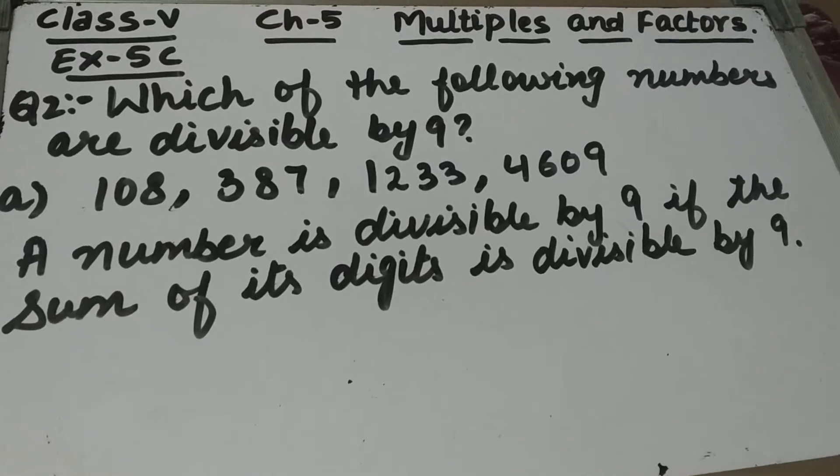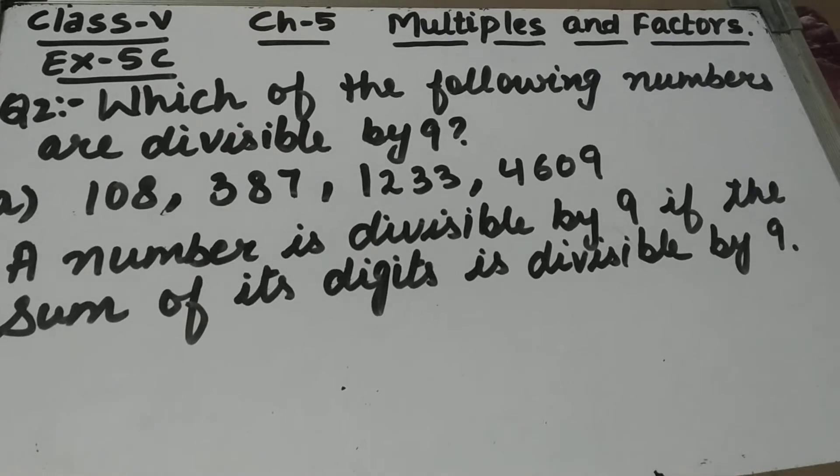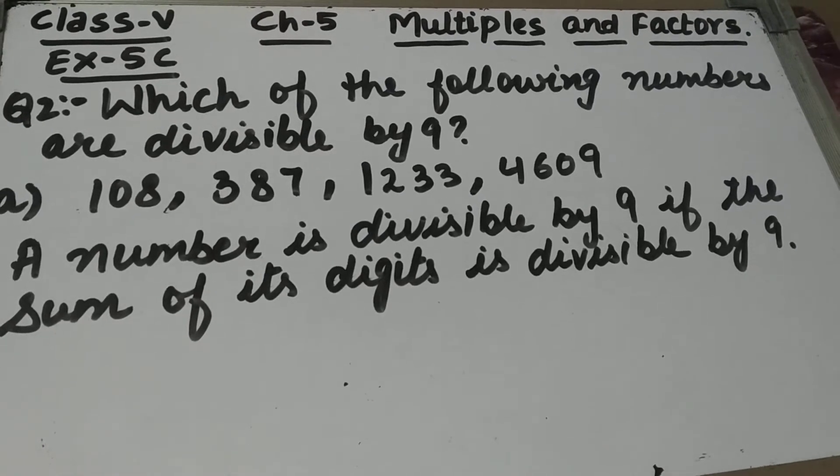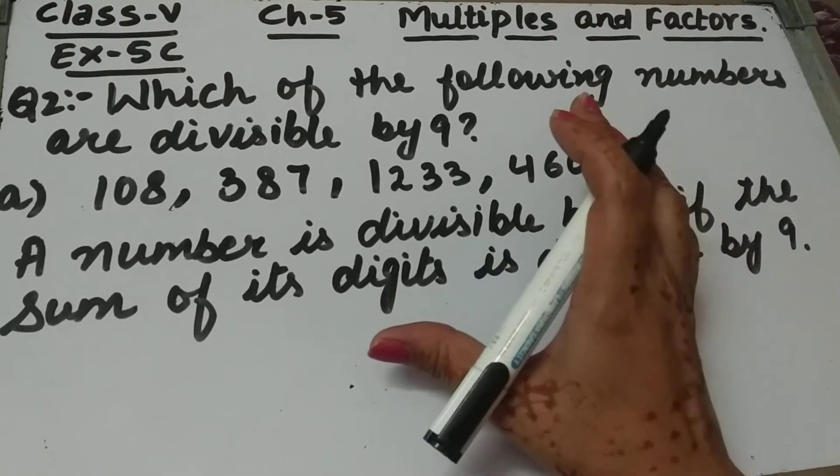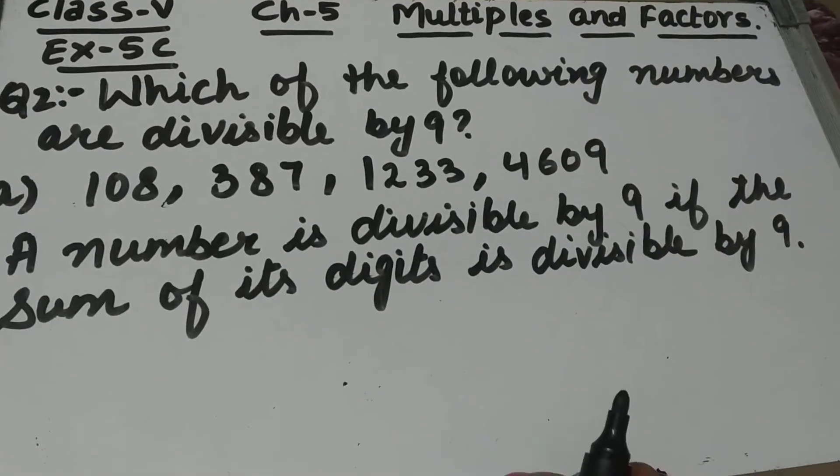Let's start question number 2 of exercise 5c. The question is: which of the following numbers are divisible by 9? A number is divisible by 9 if the sum of its digits is divisible by 9.